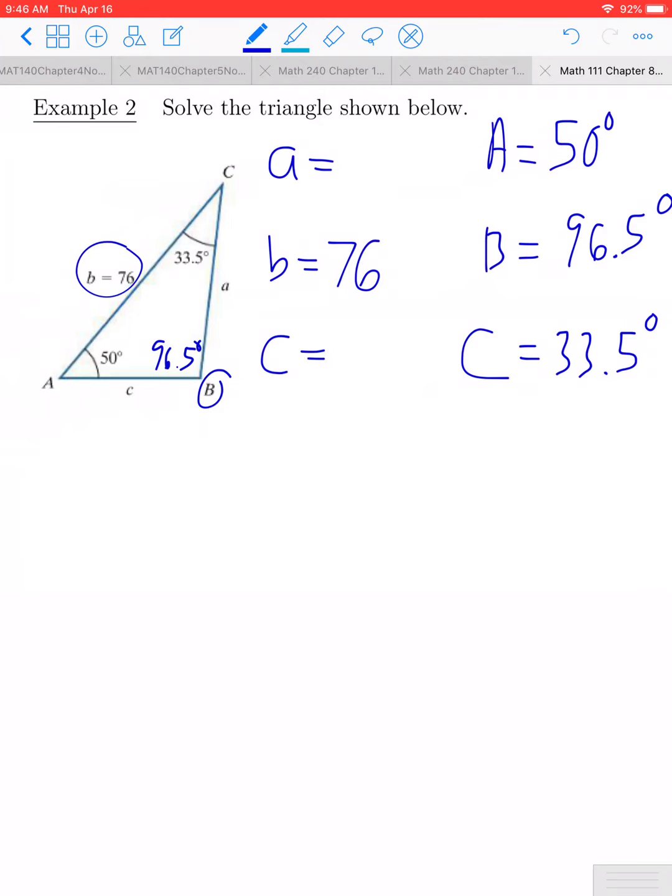Let's do side A first. According to the law of sines, side A divided by the sine of angle A, which is 50 degrees, would be equal to side B, which is 76, divided by the sine of angle B, which is 96.5.